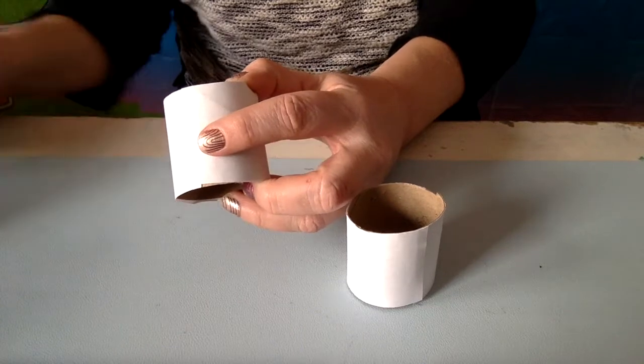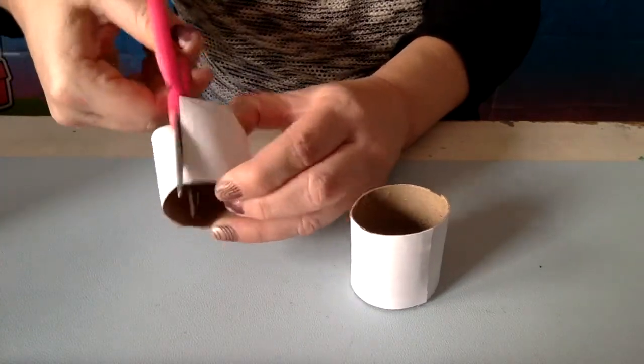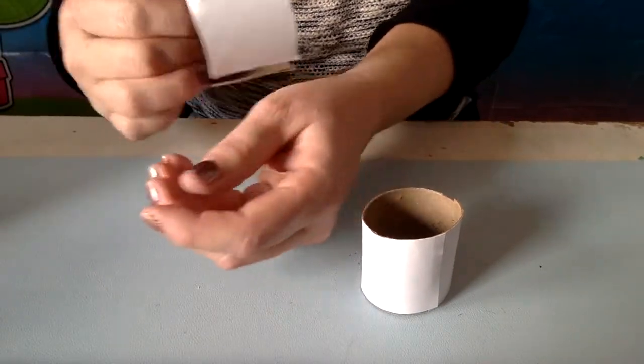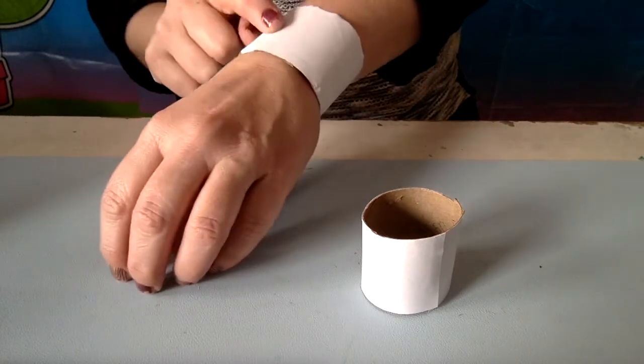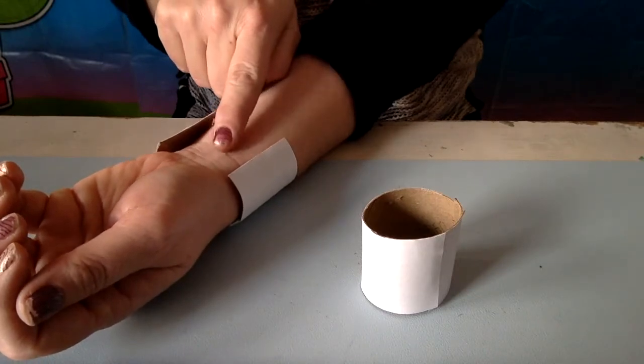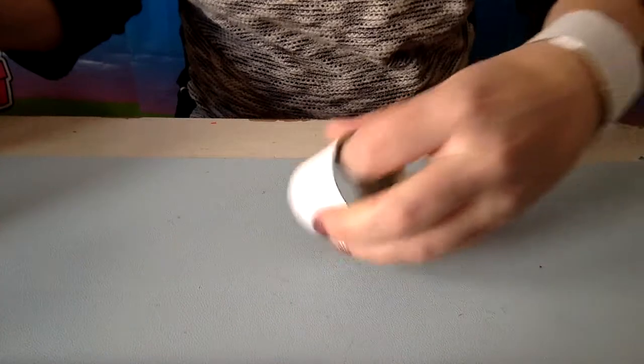Well here's the answer. Find this seam that we talked about, where one piece of paper meets the other piece of paper, and you're going to cut it all the way through right there. Now it opens up and you can easily put your superhero cuff on like this. Now it's not going to connect on this side and that's okay, it still stays on, see?